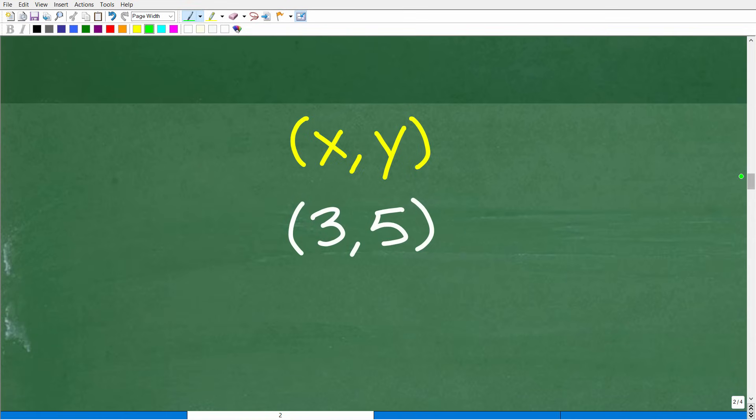But what does that mean? Well, that means that in this system, if we were to graph these two lines, these two linear equations, those lines would intersect at the coordinate 3, 5, the ordered pair, okay, the point on the x, y axis.